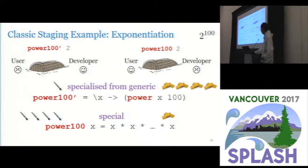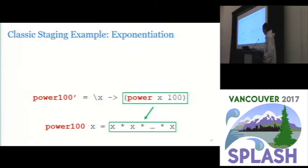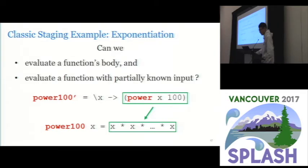So neither of the two functions are good in both aspects, so we want to write less code and achieve better runtime performance. If we can somehow rewrite the body of the lambda abstraction in this way we could achieve our goal. So can we evaluate a function with partially known input?